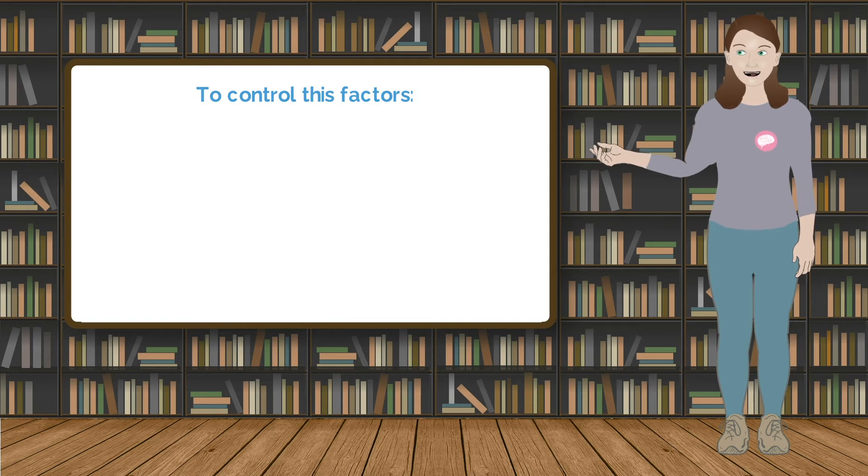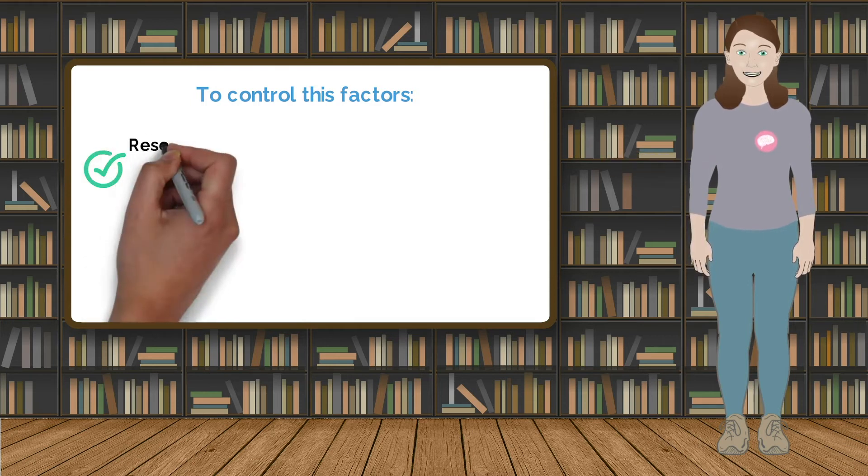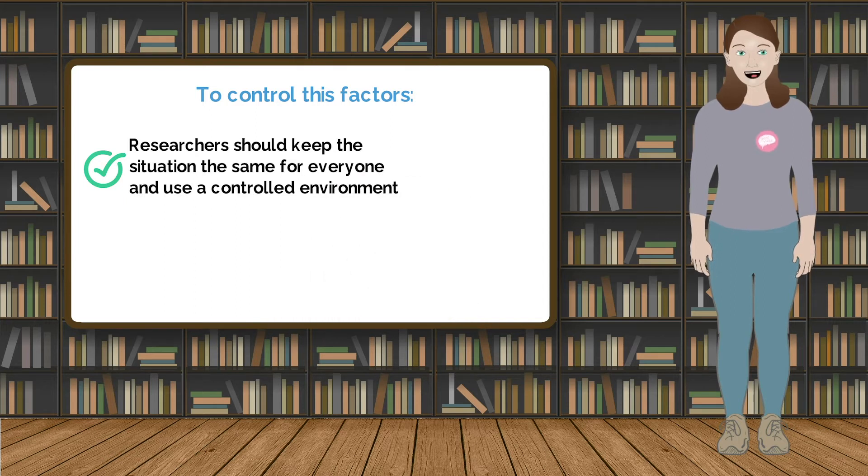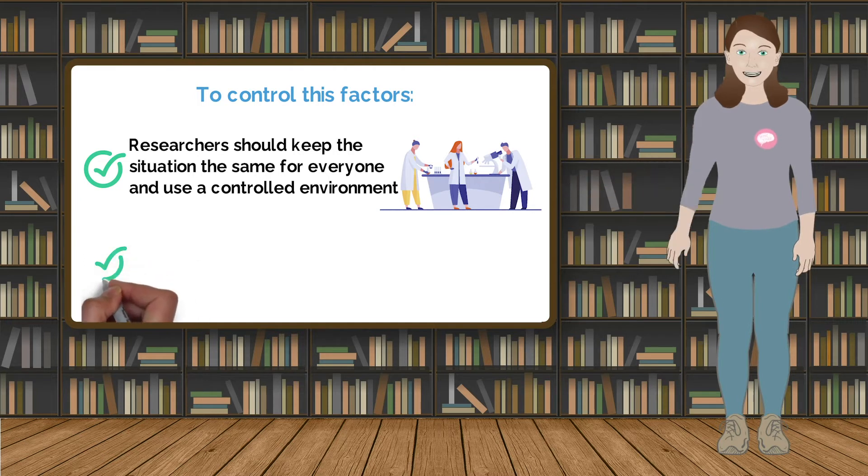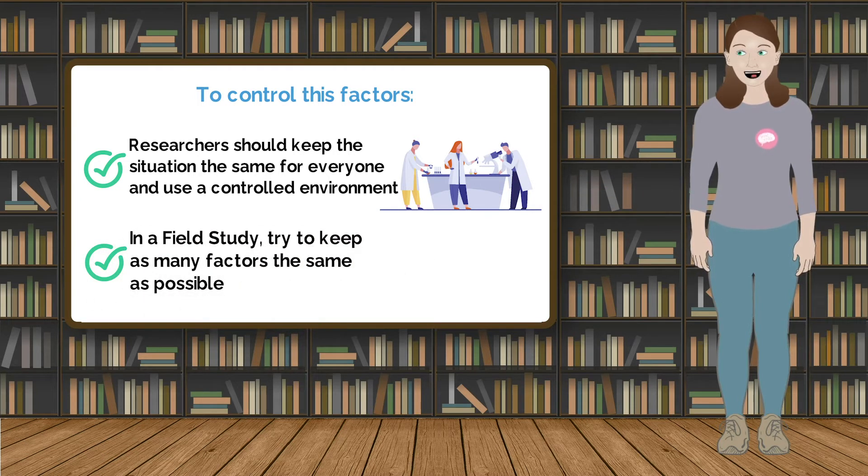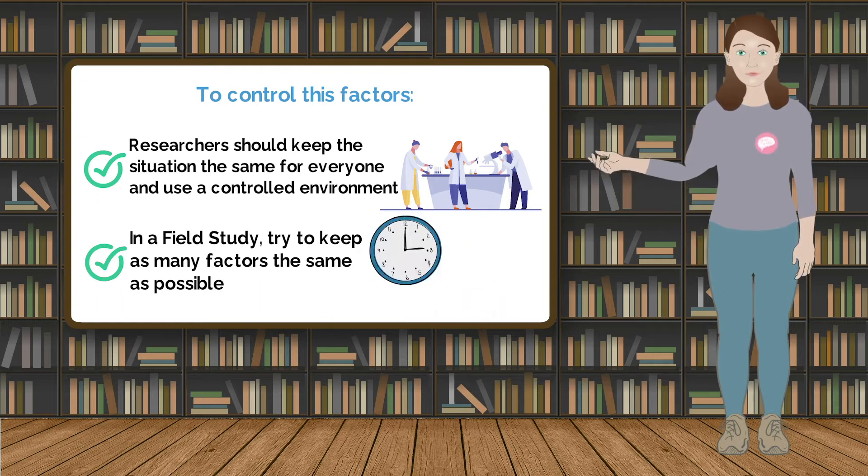To control for these in a study, the researchers should keep the situation the same for everyone and use a laboratory or controlled environment where possible, so that the environment is the same for everyone. If the researchers are using a field study, then they should try to keep as many factors the same as possible, for example the time of day.